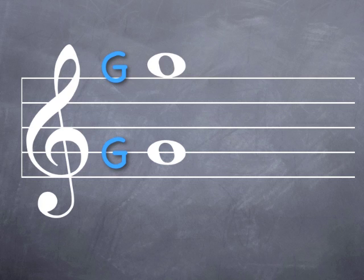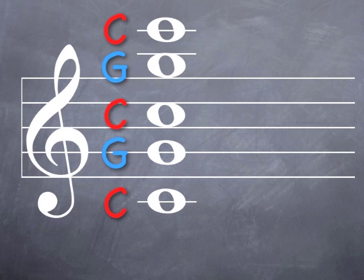There are also three Cs to memorize. The first one, called middle C, is below the staff on one ledger line. The second C, treble C, is three spaces up in the treble clef. Three rhymes with C. And finally, we have high C, way up two ledger lines above the staff.